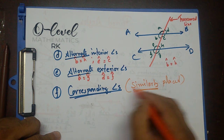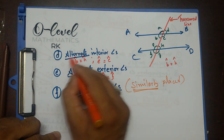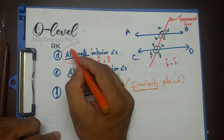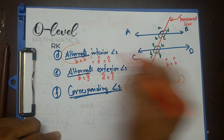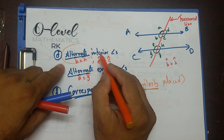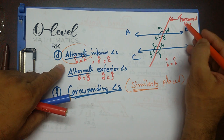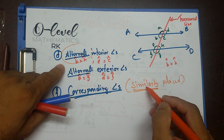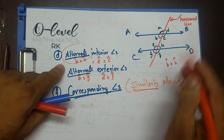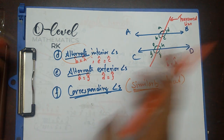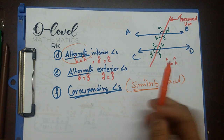What does similarly placed mean, different from alternately placed? Alternate angles means opposite sides of the transversal line, but similarly placed means on the same side of the transversal line.